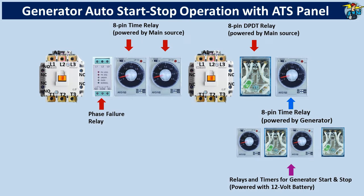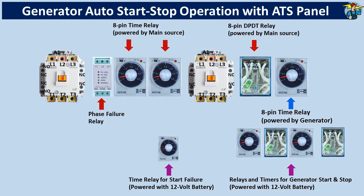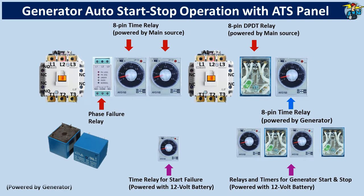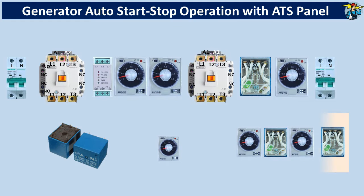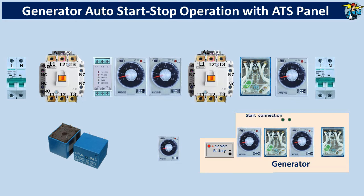For the automatic stop of the generator, another set of timer and relay is needed, operating with 12V battery. A 12V time relay is needed to monitor generator start failures. Two 5-pin single pole double throw relays are required to control the starting and stopping of the generator. You need 2 switches to supply 230V to the control circuit. 12V DC power for timers and relays will be supplied from the generator battery.